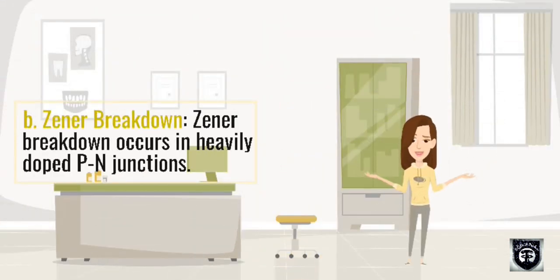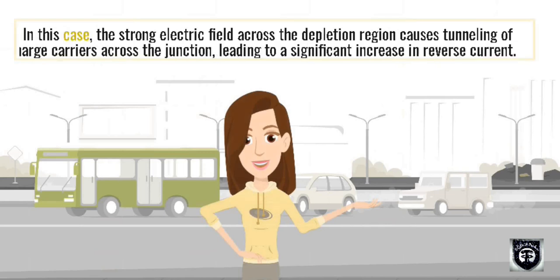Zener breakdown: Zener breakdown occurs in heavily doped P-N junctions. In this case, the strong electric field across the depletion region causes tunneling of charge carriers across the junction, leading to a significant increase in reverse current.